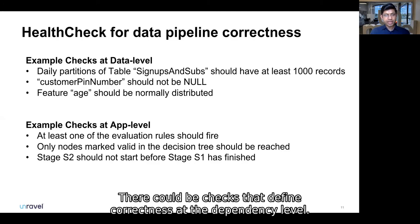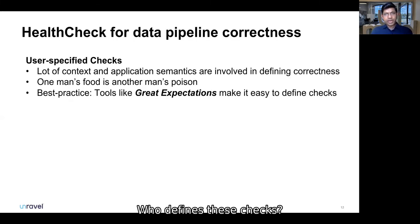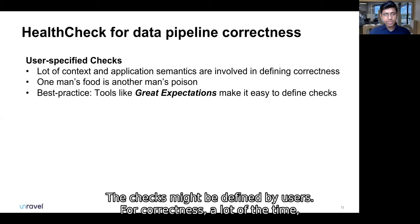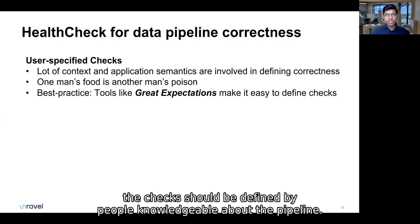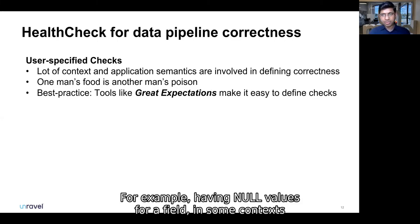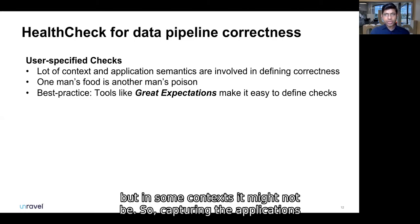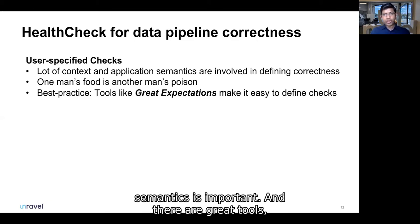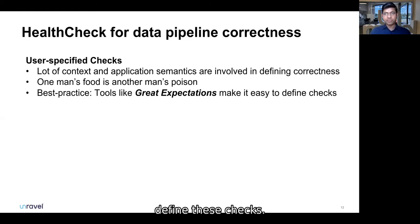There could also be checks that define correctness at a dependency level — for example, a stage should only start after some other stage has finished. Who defines these checks? As we'll see consistently throughout the talk, the checks might be defined by users. For correctness, a lot of the time the checks should indeed be defined by people knowledgeable about the pipeline — for example, whether having null values for a field is acceptable depends on context. Capturing the application semantics is important. We today have great tools, like Great Expectations, that make it very easy for pipeline developers to define these checks. But users cannot be expected to write and define all the checks, even though it's a best practice to do so.